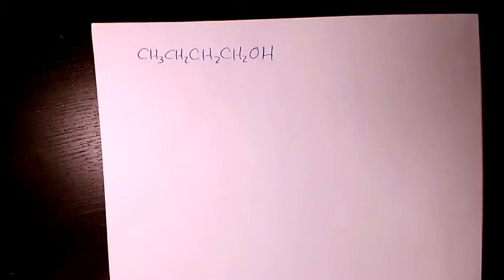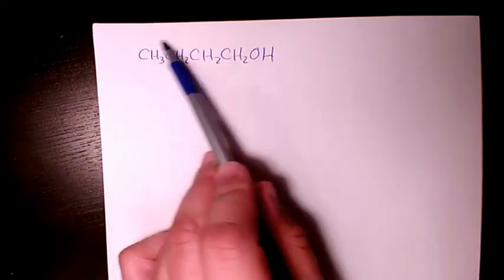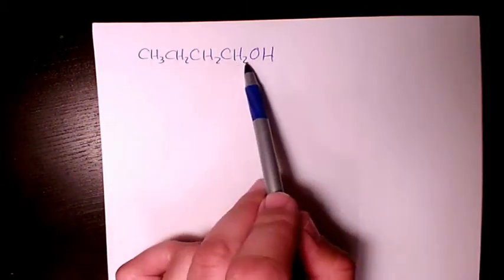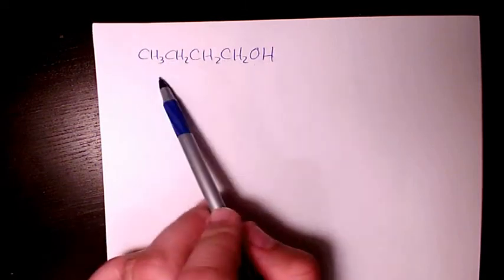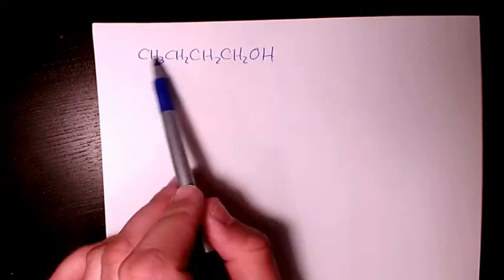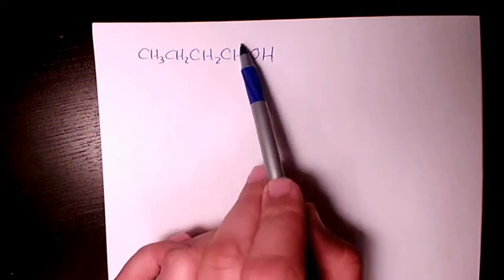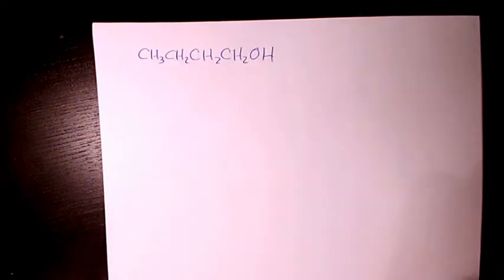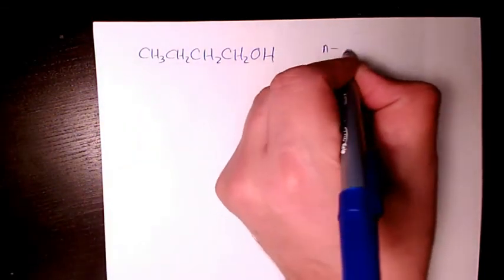What's up guys, this is Masi. Welcome to my channel. In this video I want to show you how to name this organic compound. As you can see here, we have butane — a main chain with four carbon atoms and no branch, just the main chain, and we have a hydroxyl group here. So we have butane with one hydroxyl group.